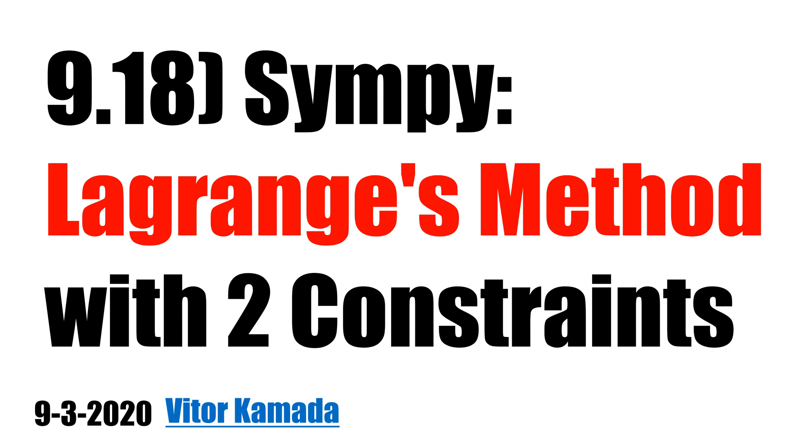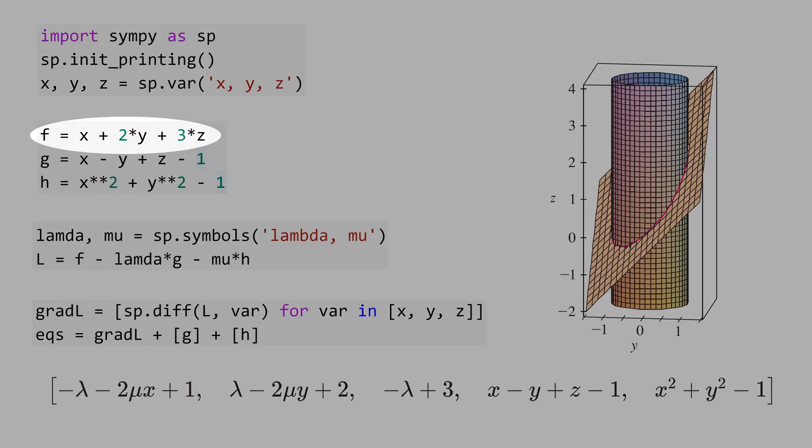Let's learn how to solve optimization problem with two constraints. We want to maximize this function f under the constraint of g and h.